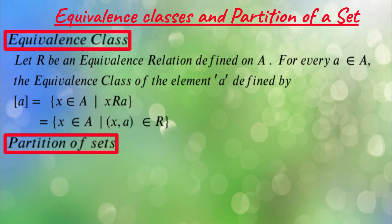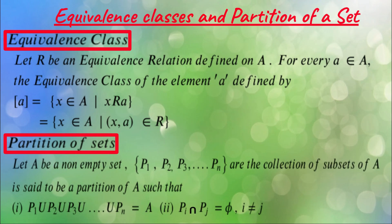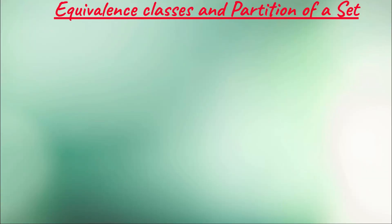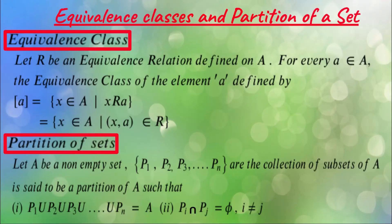The equivalence classes form a partition of set A. In general, if A is a non-empty set and P1, P2, ..., Pn are a collection of subsets of A, it is said to be a partition such that P1 ∪ P2 ∪ ... ∪ Pn = A, and Pi ∩ Pj = null set. This concept is called mutually exclusive and exhaustive events in probability.